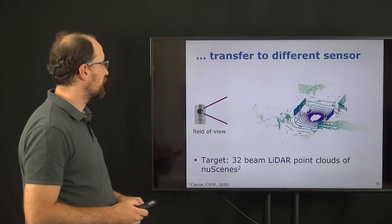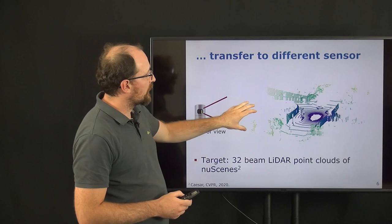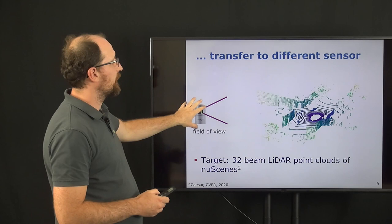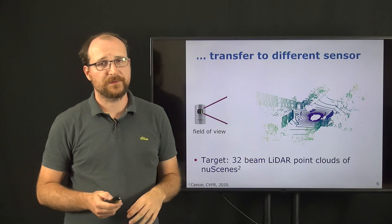We now want to transfer the labels such that we get a scan from the target domain, which is here now, for example, the NuScenes data, which uses a 32-beam Velodyne sensor. As you can see here, the LiDAR point cloud is much sparser, but also shows a different field of view. So the field of view is much larger and shows also the upper parts of buildings.